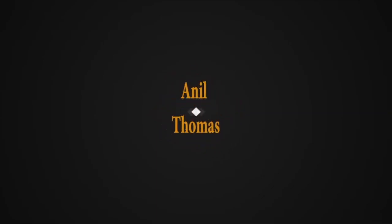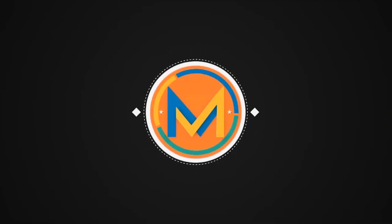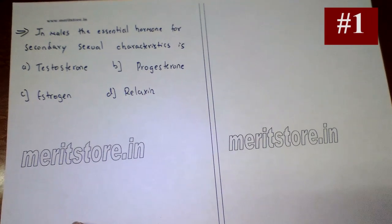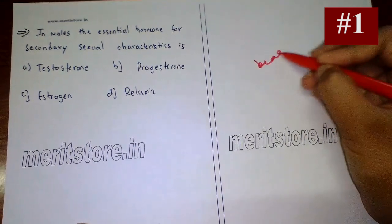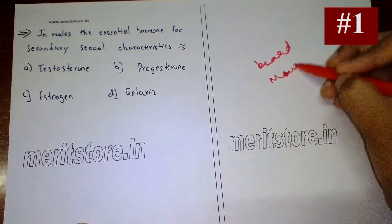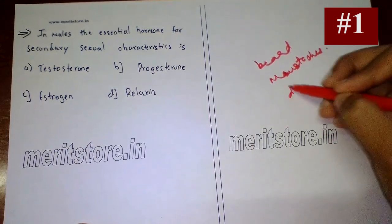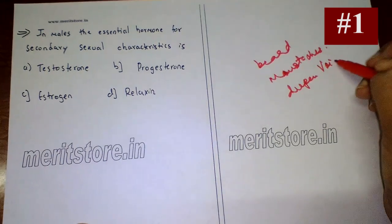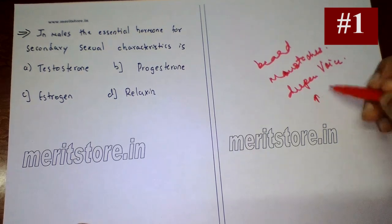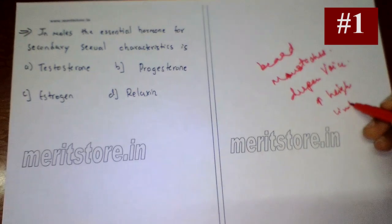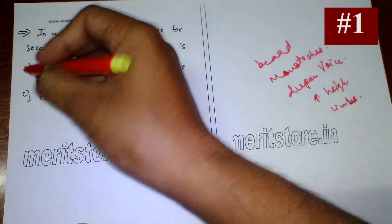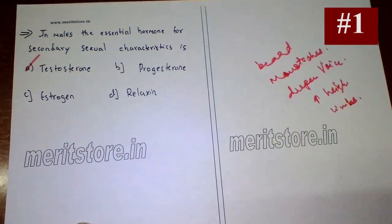The essential hormone for male secondary sexual characteristics is testosterone. Testosterone stimulates the development of male secondary sexual characters like beard, mustache, deepening of the voice, broadening of shoulders, increased height due to elongation of bones, and development of limbs. These are secondary sexual characters in males, carried out by androgen testosterone, which is secreted by interstitial cells or cells of Leydig.